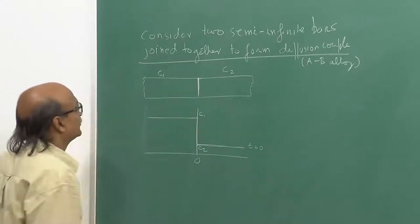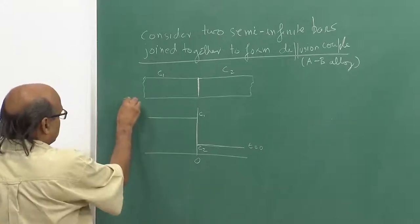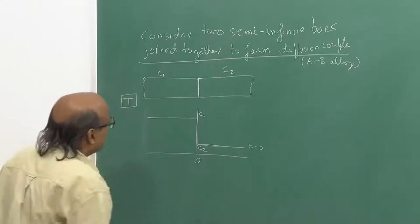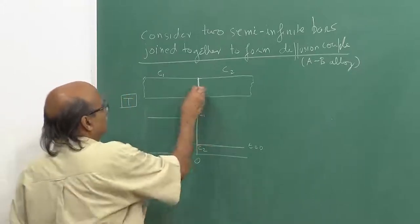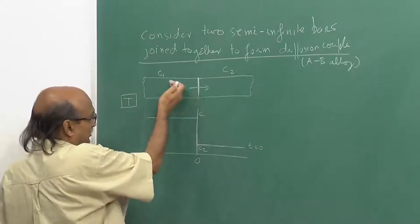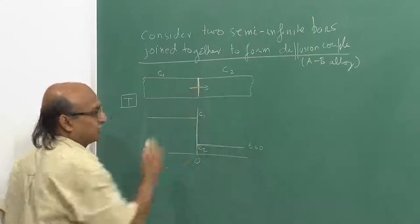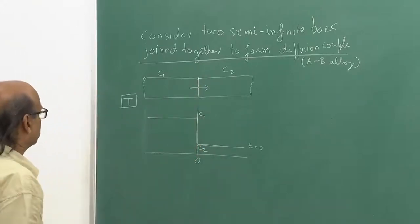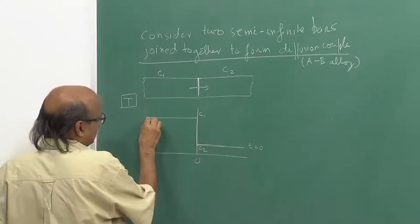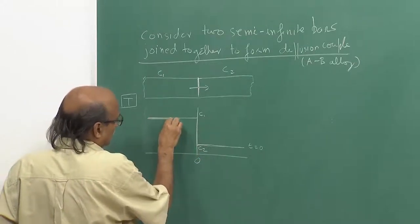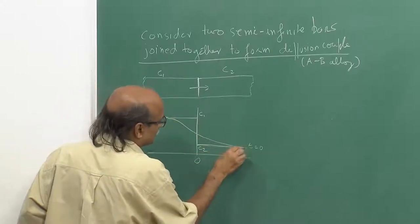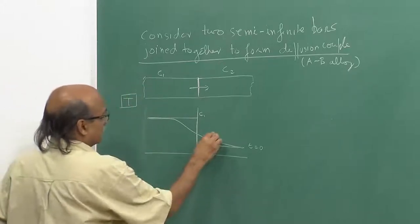This entire diffusion couple is kept at an elevated temperature T so that B atoms could diffuse from the left to right, C1 — the concentration on the left-hand side of B atoms — being higher than the concentration of B atoms on the right-hand side. After some time T at this temperature, the concentration profile of B atoms would start to look something like this, at some time T.